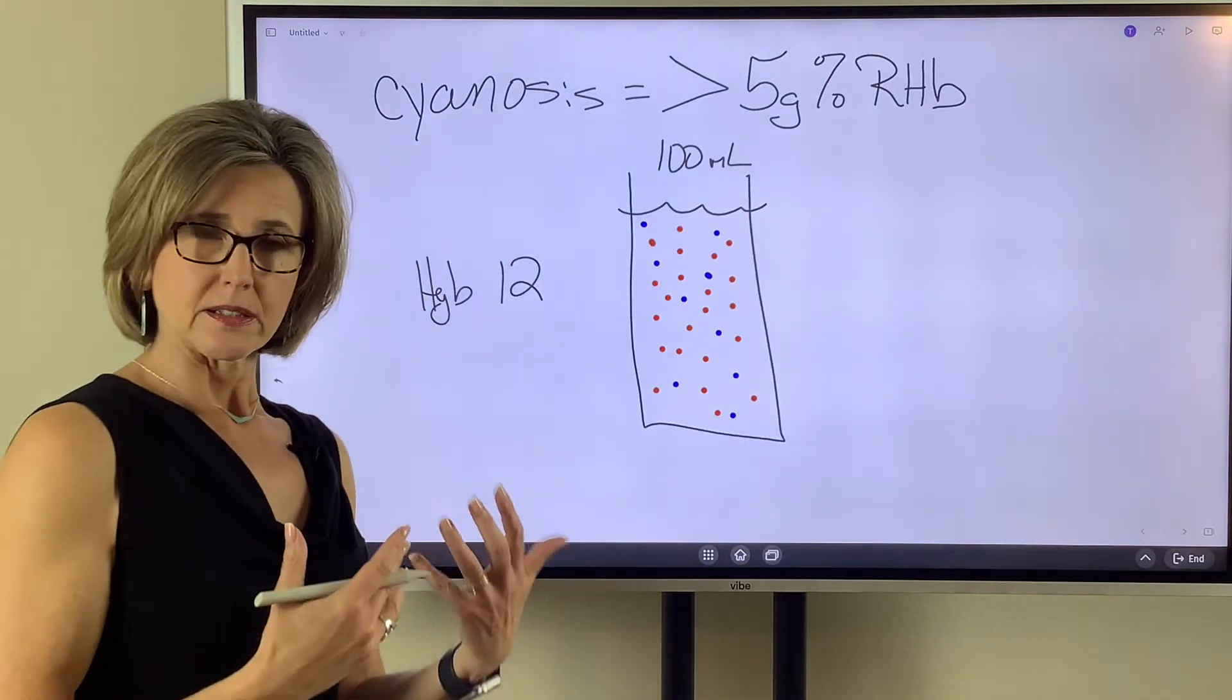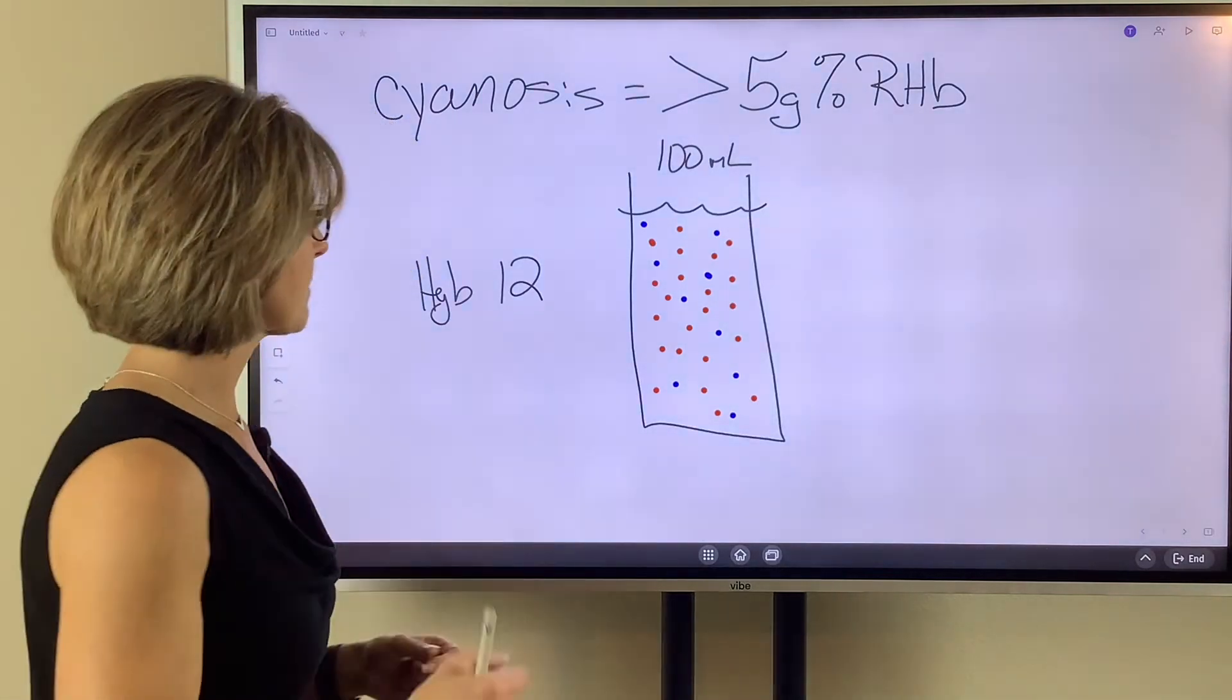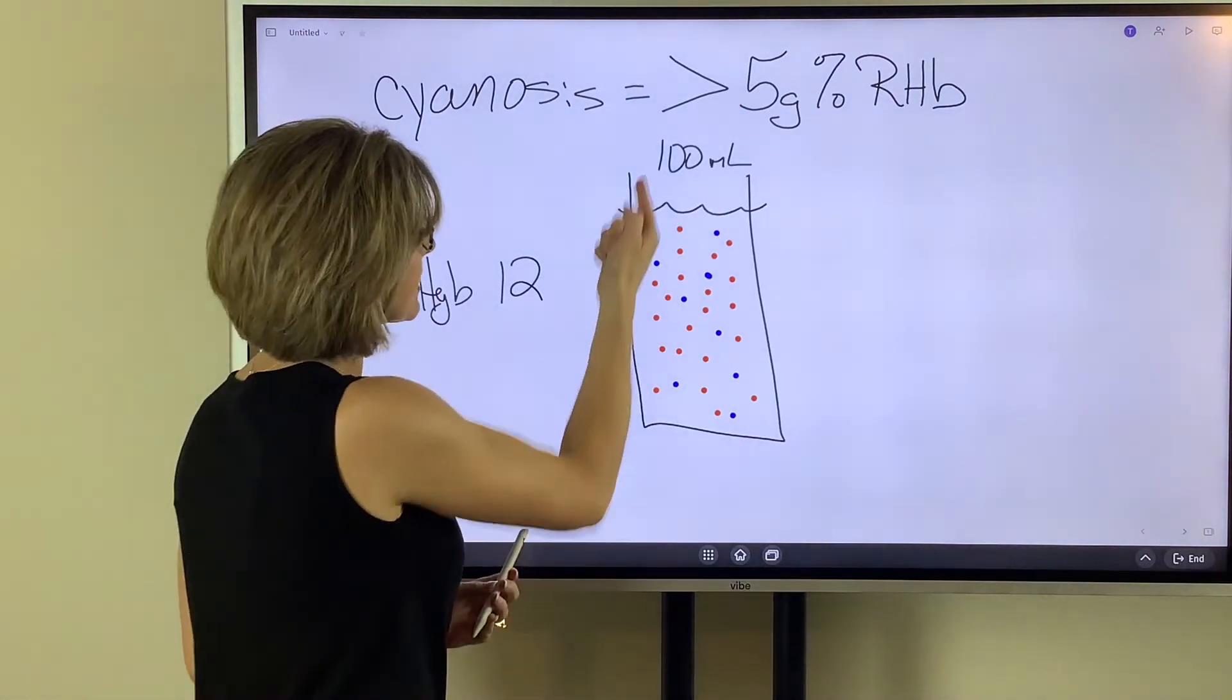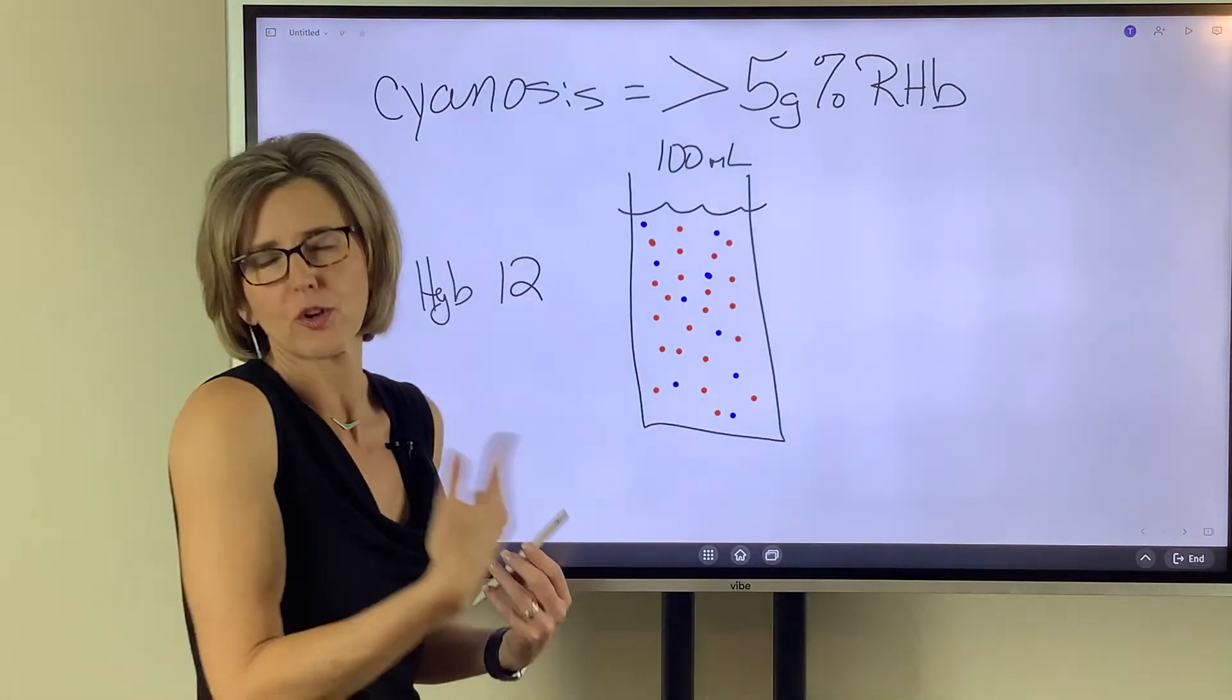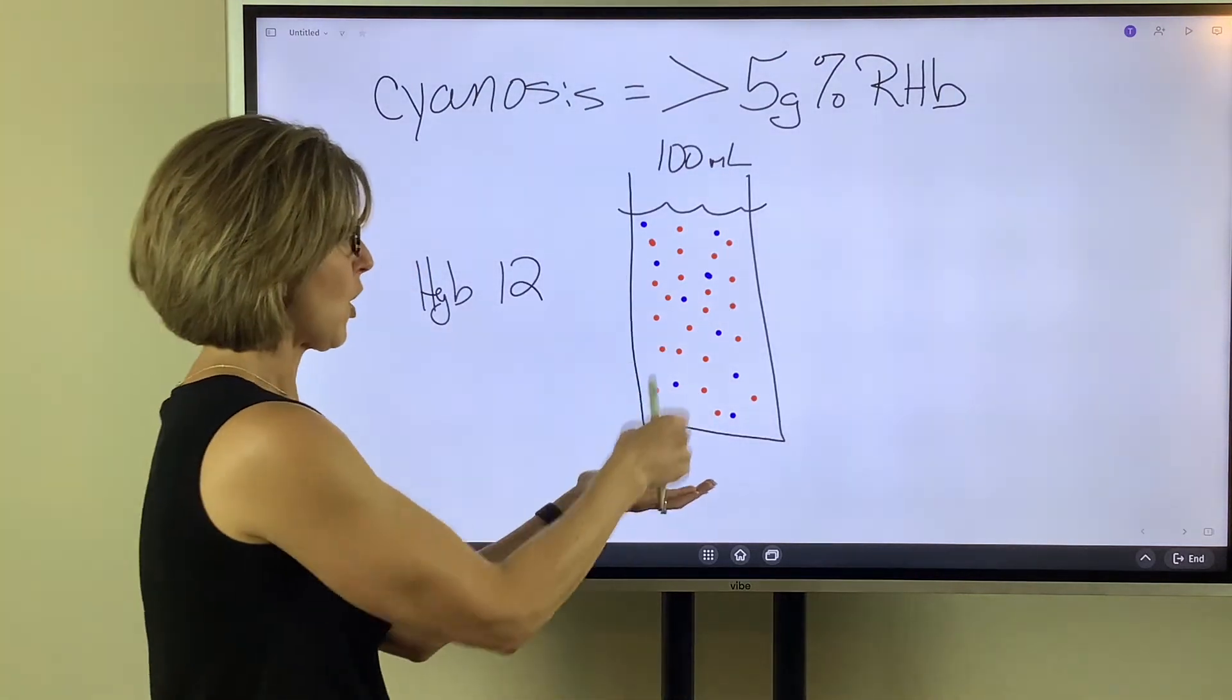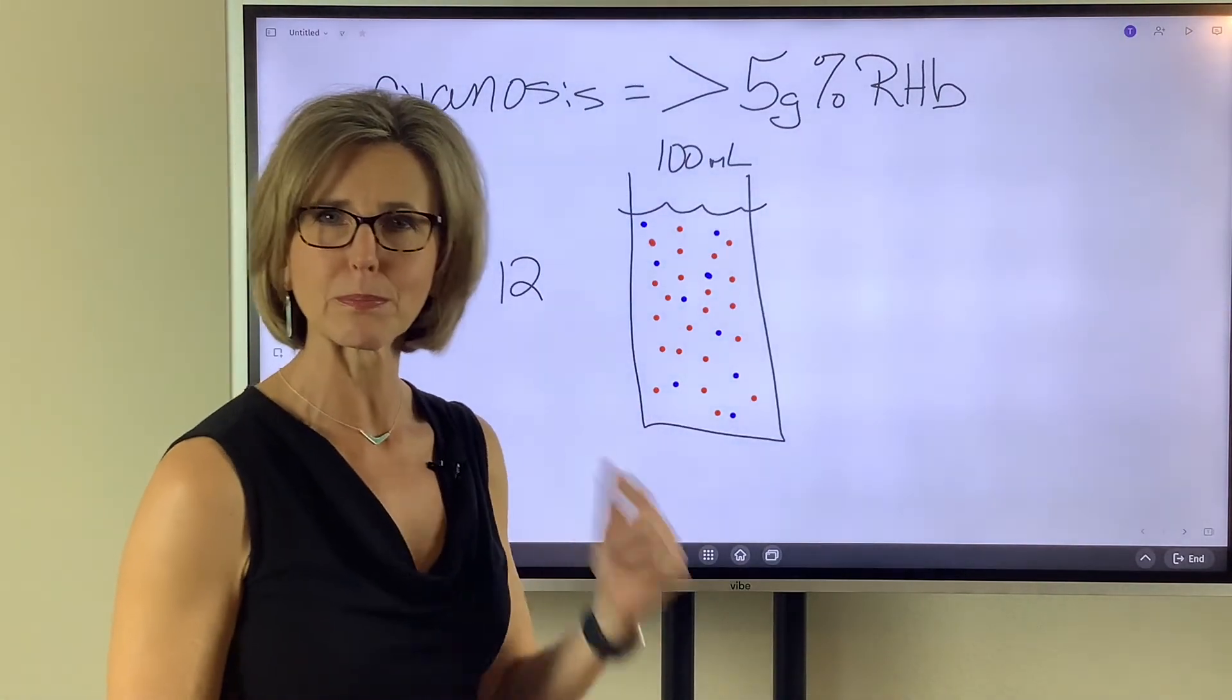So yes, cyanosis is the blue discoloration of skin, but it is caused by there being greater than five grams of reduced hemoglobin in 100 ml of blood. We say that greater than five grams percent. So if you can pull out all of the deoxygenated hemoglobin, weigh it, and it weighs greater than five grams, your patient will be blue.